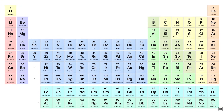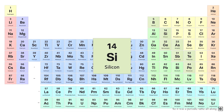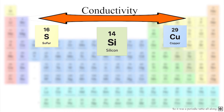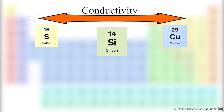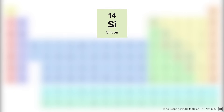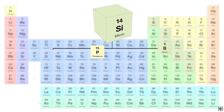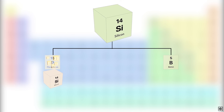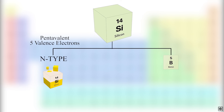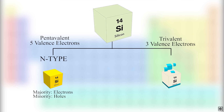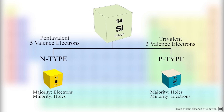A MOSFET is made from a semiconductor material such as silicon. Semiconductors have conductivity between conductors and insulators. Hence, to make a semiconductor a good conductor, we introduce impurities in the pure crystal. There are two types of impurities that are added. If the impurities are pentavalent, then the resulting semiconductor is N-type, and electrons are the majority charge carriers. If the impurities are trivalent, then the resulting semiconductor is P-type, and holes are the majority charge carriers.